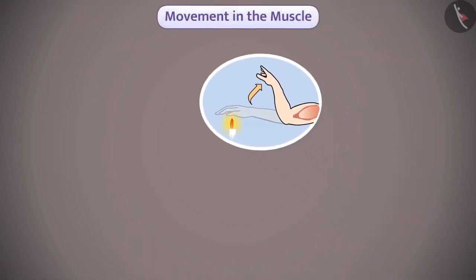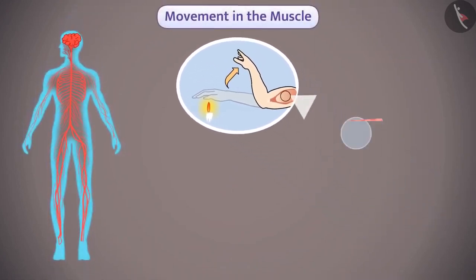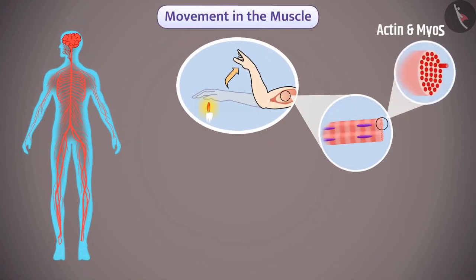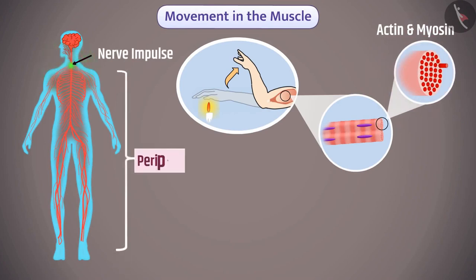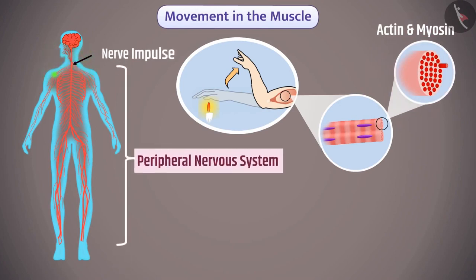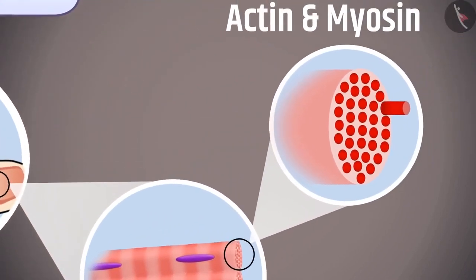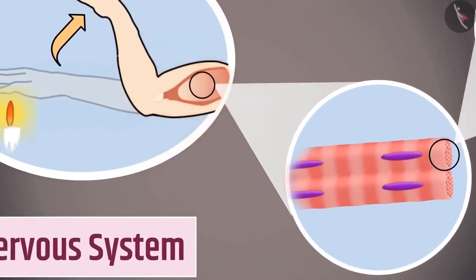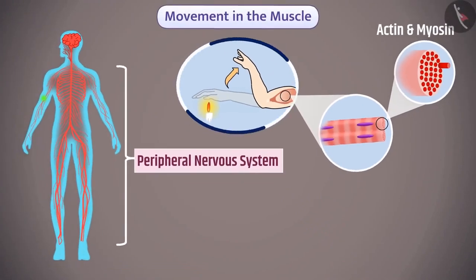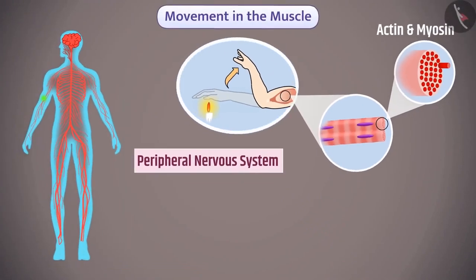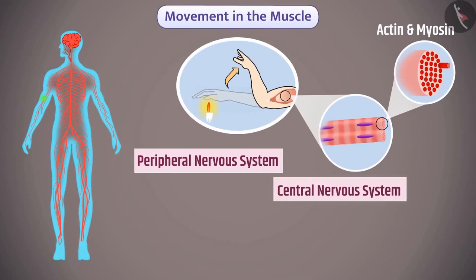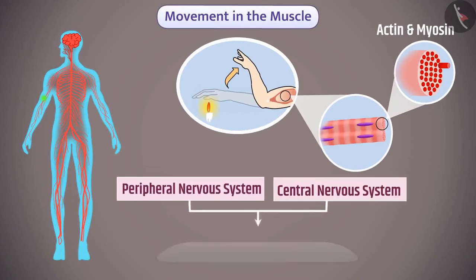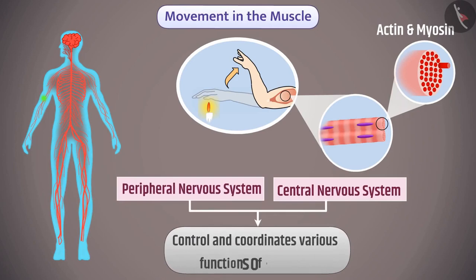Muscle cells contain special types of proteins. When a nerve impulse reaches the muscle cell via the peripheral nervous system, the electrical impulse changes both the shape and arrangement of these proteins, causing the shape of the muscle to change and producing muscular movement. Thus the central nervous system and peripheral nervous system together control and coordinate various functions of the body.